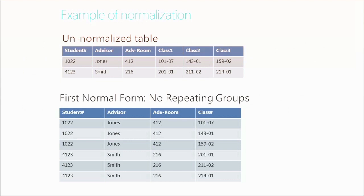Here's an un-normalized table. We've got student number, advisor, the advisor's room number, and then for student 1022 they have classes 101-07, 143-01, and 159-02. This is an un-normalized table. Over the next few slides, we're going to take this content and normalize it — implementing first, second, and third normal form — and you'll see what we end up with.